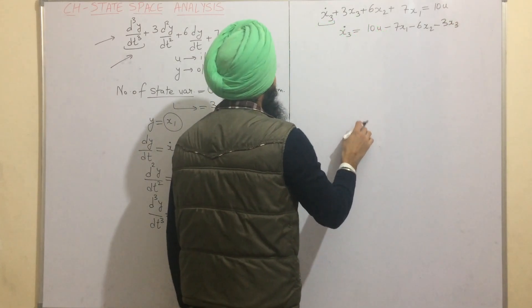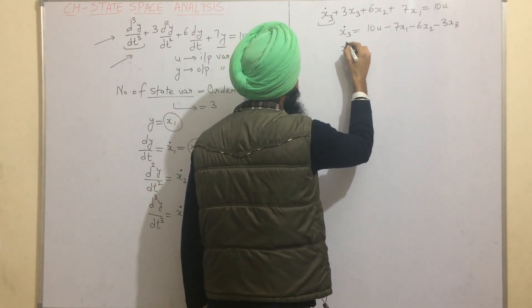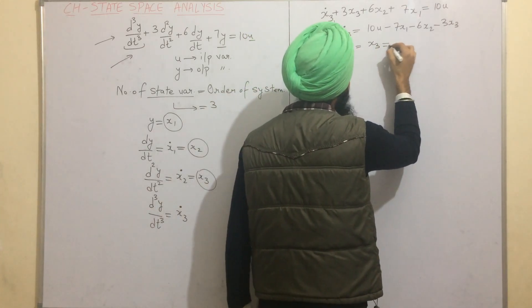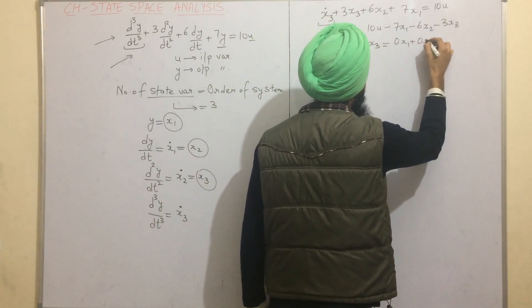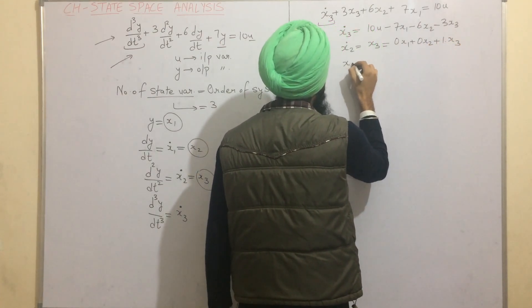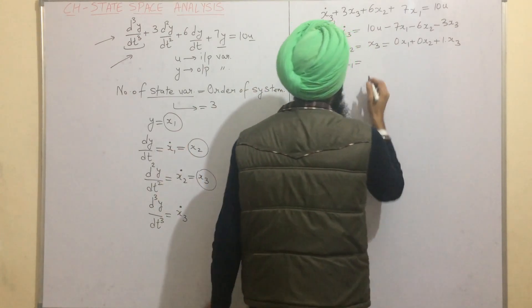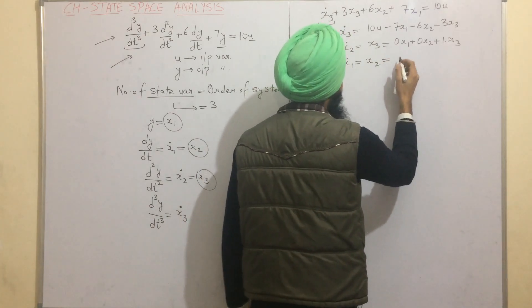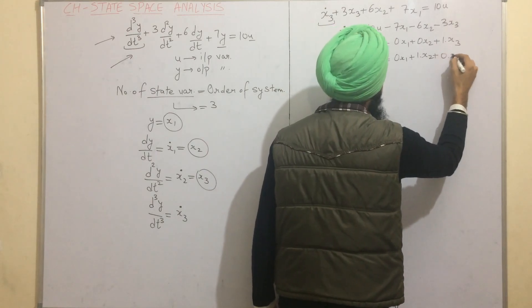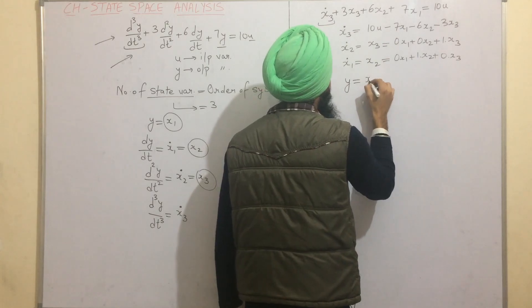We also know that x2_dot = x3, which can be written as 0·x1 + 0·x2 + 1·x3. Similarly, x1_dot = x2, which can be rewritten as 0·x1 + 1·x2 + 0·x3. Also, we have said that y = x1.